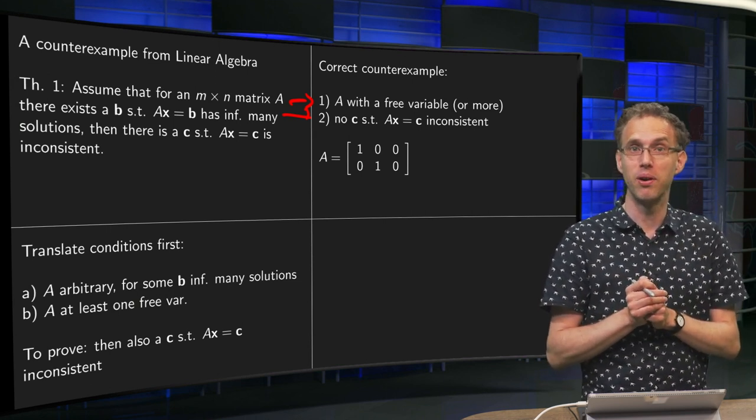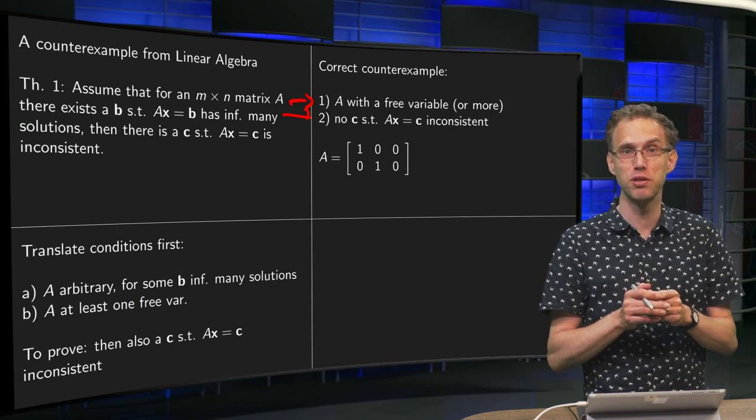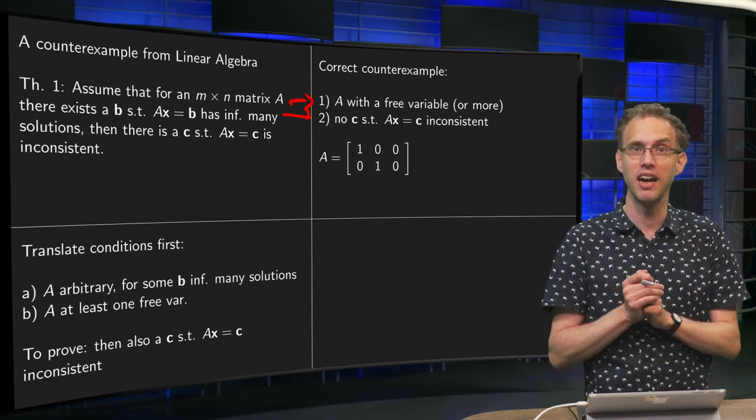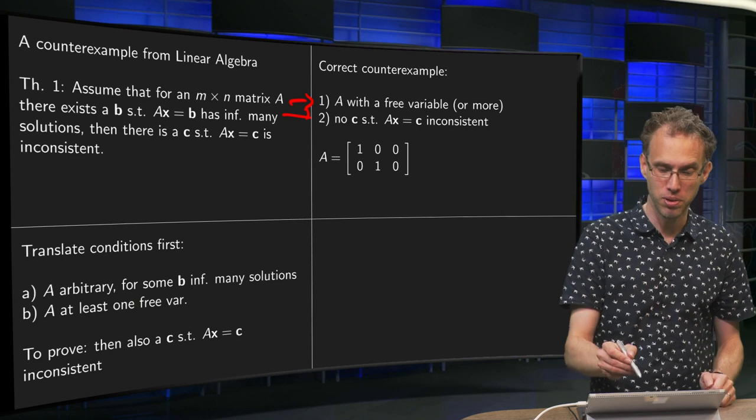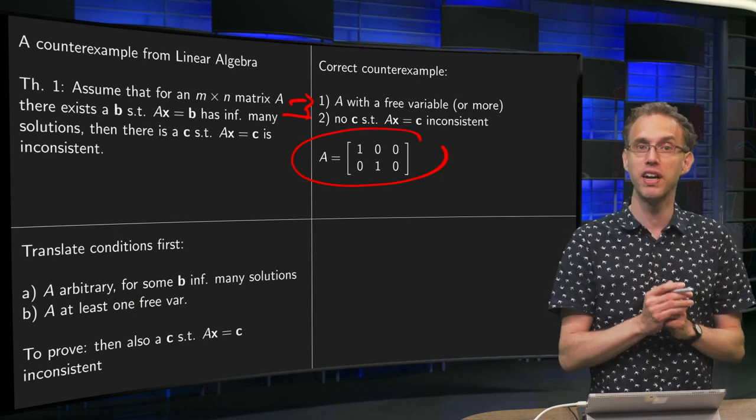Now, if you try to find a counterexample, make your A as easy as possible. So put ones and zeros in there to get an easy counterexample. And the easiest I could think of is this one over here.